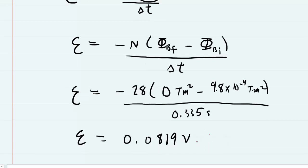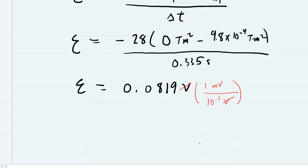If your homework system requires this to be converted into millivolts, we simply remember that one millivolt is equivalent to 10 to the minus 3 volts. We multiply by this conversion factor, the volts will cancel out. We're basically multiplying our answer by 1 over 10 to the negative 3. We end up with a final induced EMF value of 81.9 millivolts. This would be the correct answer to part A.